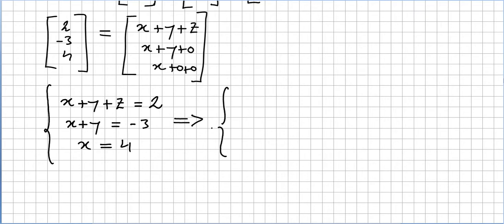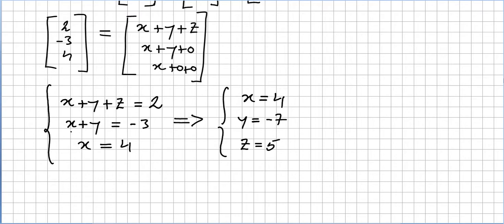This is not hard — we already have x equals 4. From the second equation, y equals minus 3 minus 4, which is minus 7. And z equals 5. It's difficult to go wrong here.